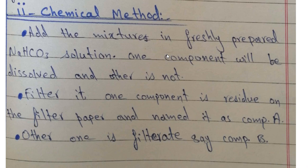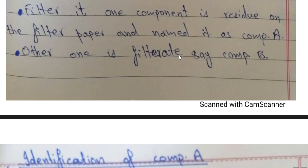The residue on the filter paper will be dried and become Component A. The other component passes through as filtrate. For the filtrate, we acidify it by adding dilute HCl in a minute amount until precipitates form. When precipitates appear, we filter them out. These precipitates will be called Component B, and Component B is thus separated out.